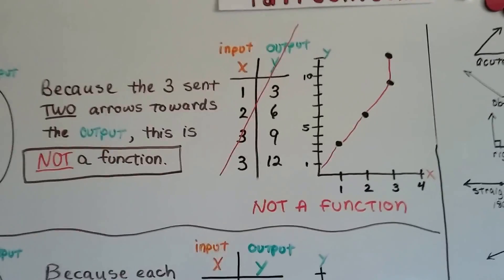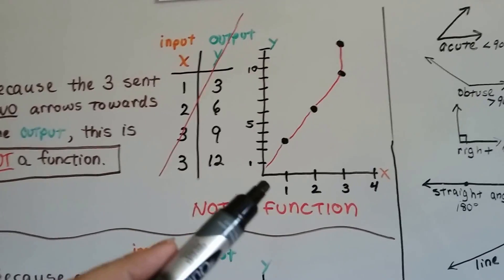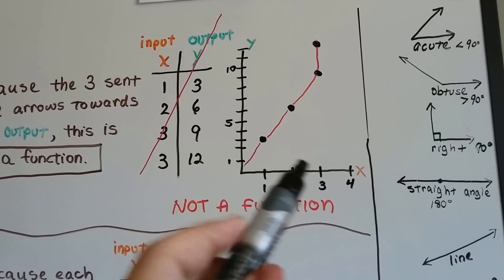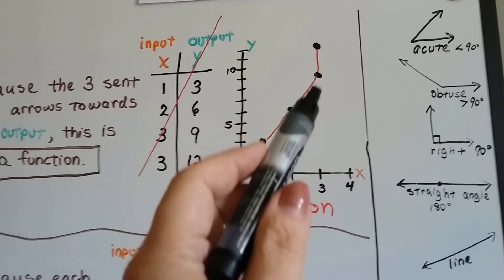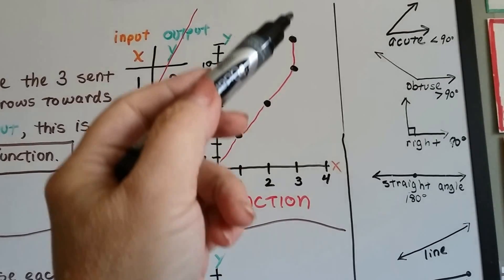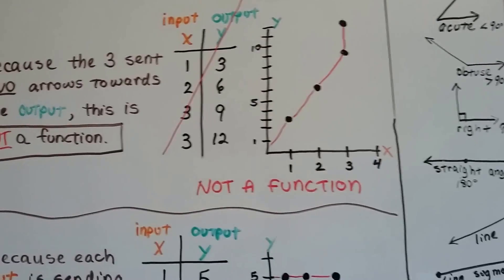Well, on a graph, it would be graphed like this. It would start heading uphill, and because the 3 is repeated, the 3 would be graphed as 3, 9 and 3, 12. It would start going up on a nice slope and then shoot straight up. That's not a function.